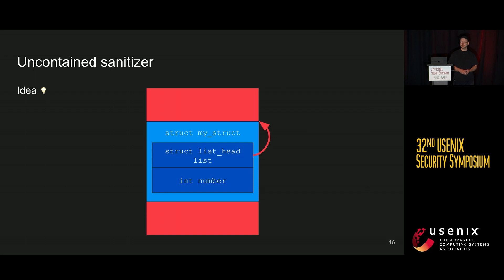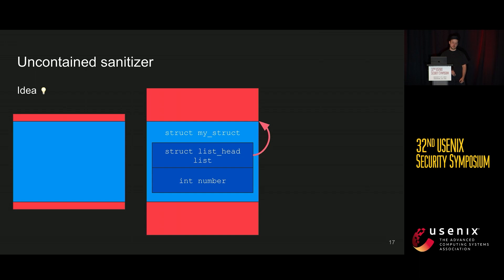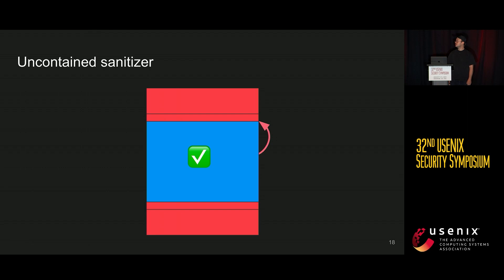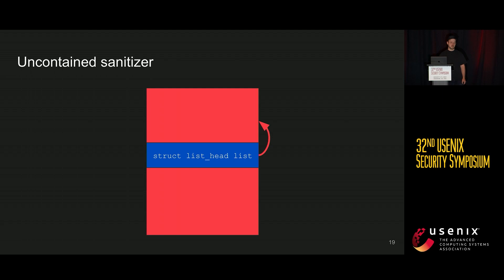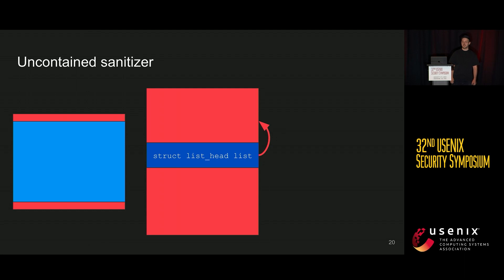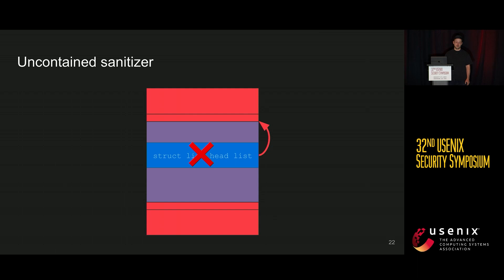When we do container_of we know which type we're casting to and what the memory layout should be — where that object starts and ends. So we can build a mask: just above the object there should be a red zone, within the object there shouldn't be a red zone, and after the object there should be a red zone again. We overlay that mask on our object and if it matches, we did a correct cast. But if we have a list_head that isn't actually contained in anything, only red zones will surround it. When we overlay the same mask, it won't match and we can report a bug.